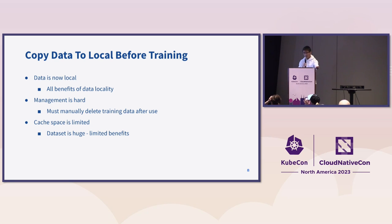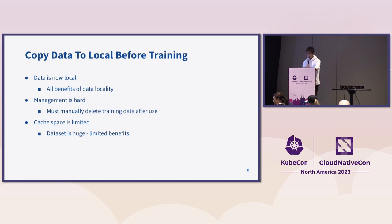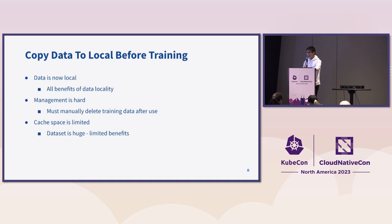The second way is to copy the data to local before training. The data is local so you get all the benefits of data locality including cost saving and performance gain. But management is hard because you must manually delete the training data after use due to limited disk space. And because data sets can be huge, only a partial or small amount of data will be stored locally, so you only get limited benefits of data locality.